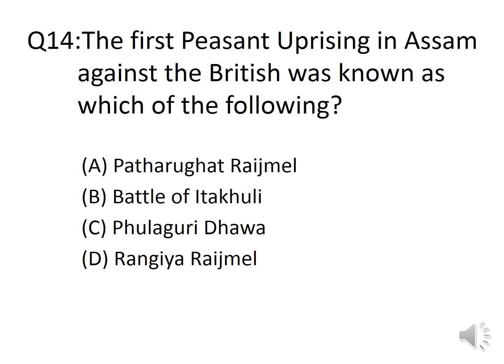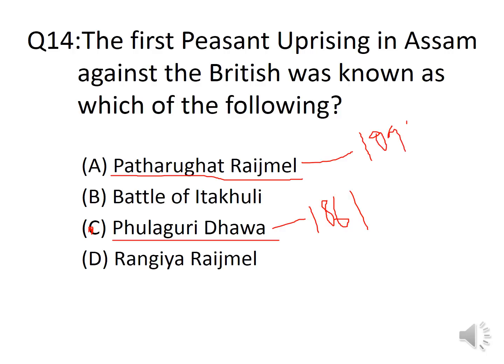Question 14: The first peasant uprising in Assam against the British was known as which of the following? Options: A. Patharughat Raijmel, B. Battle of Itakhuli, C. Phulguri Dhawa, D. Rangiya Raijmel. The answer is Option C, Phulguri Dhawa. This revolt took place in 1861. The Patharughat Raijmel took place in 1894.